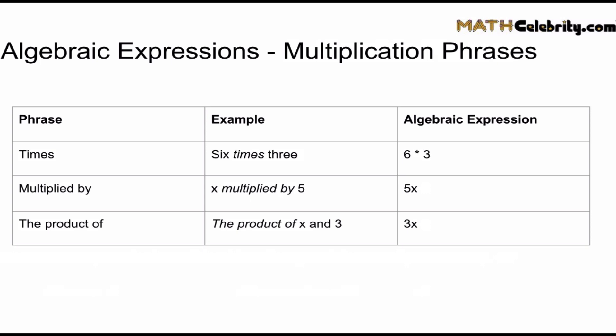So now notice the difference between multiplying two numbers. We use 6, the times symbol, and 3. But look at the second and third rows. When we multiply a constant by a variable, we just stick them together. There's no star sign. There's no multiplication sign. We write it as constant variable. And so that's a quick shortcut for you when you're building these.